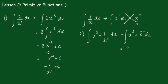This becomes x to the 4th on 4 plus x to the minus 1 on negative 1 plus a constant. That becomes x to the 4th on 4 minus 1 over x plus a constant.